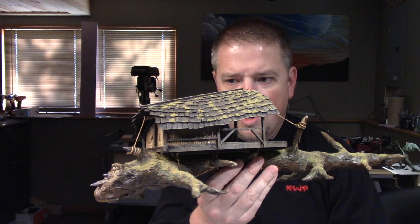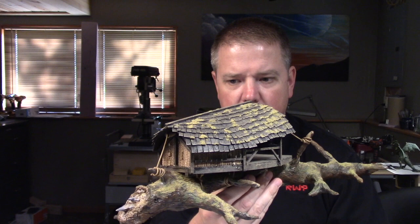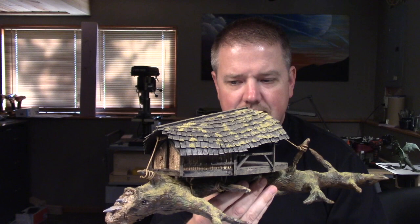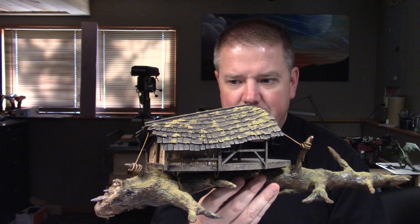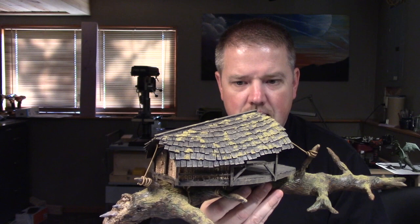It is a creature that mimics a fallen log on the forest floor, similar to a walking stick insect. But this creature is very large and it just moves along the forest floor and eats the dead material, dead trees, plants, etc. And that's how it survives.